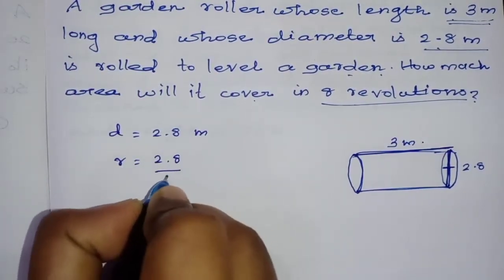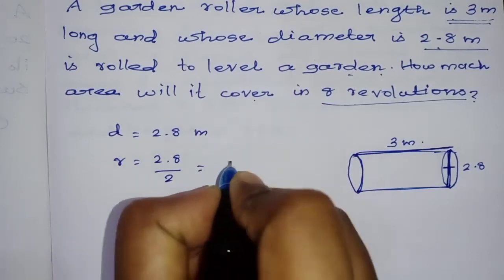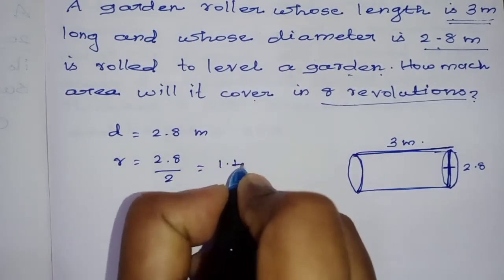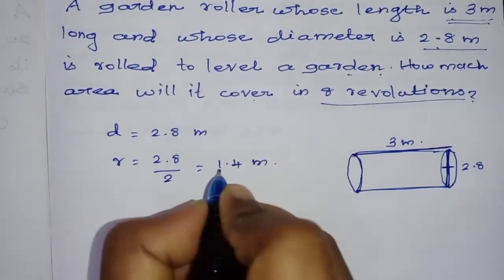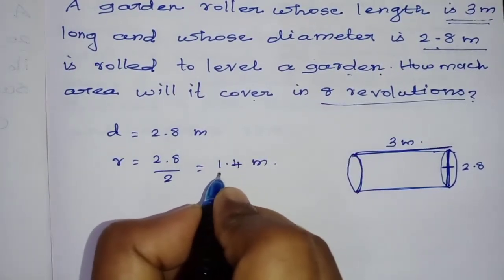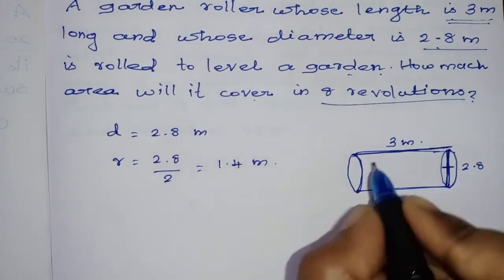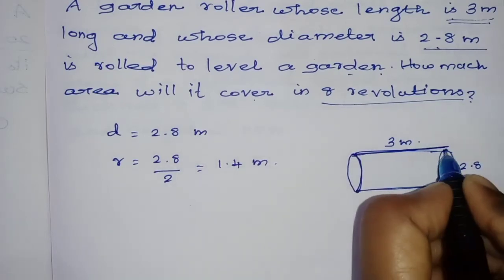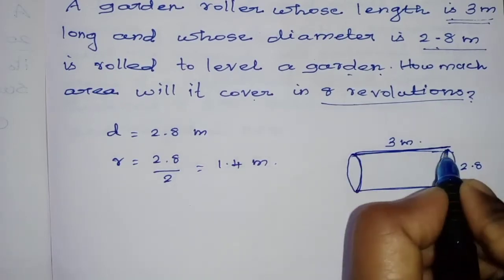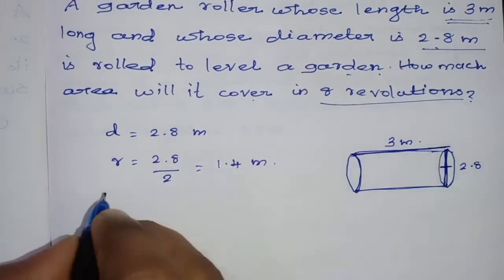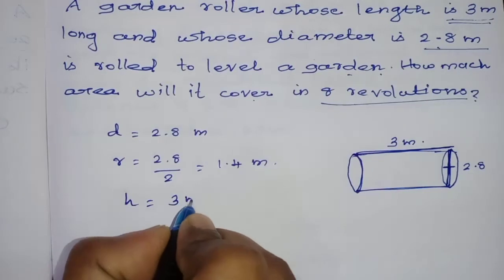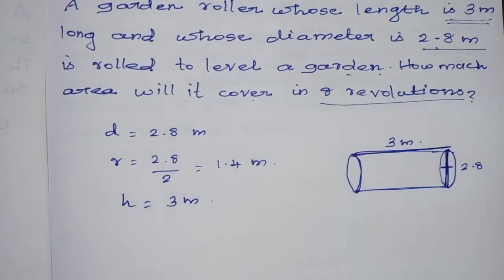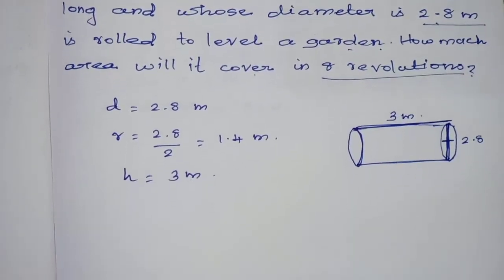So the radius is 1.4 meters. For the cylinder, the height is equal to 3 meters.